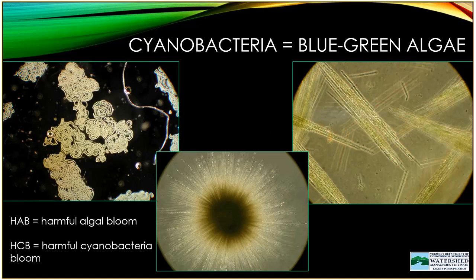Cyanobacteria are photosynthetic organisms that can be found in a variety of environments around the world. They're also called blue-green algae, and if you do a web search on either of these terms, you'll see that they're used interchangeably. Cyanobacteria is actually the most scientifically accurate term. Cyanobacteria are classified with the bacteria and not where the algae fall into the taxonomic system, so cyanobacteria is the term we use because it's more accurate. You may also hear these organisms referred to as HABs, or harmful algal blooms. Bloom is a non-scientific term used to describe a situation where there are a lot of a particular organism in one place.